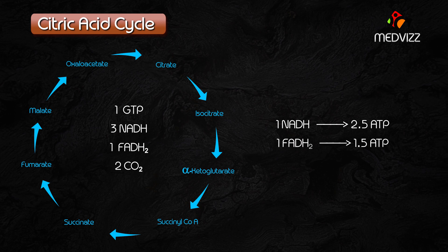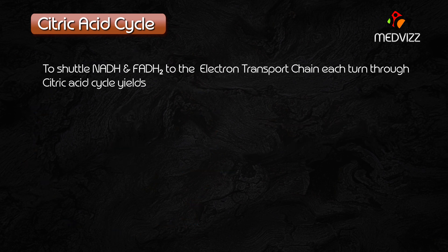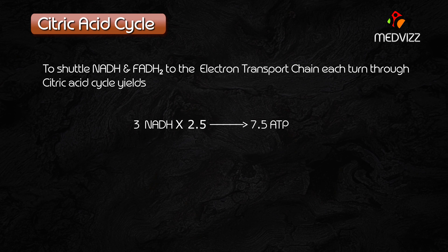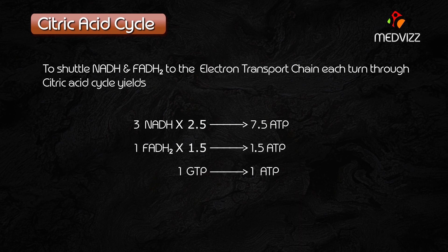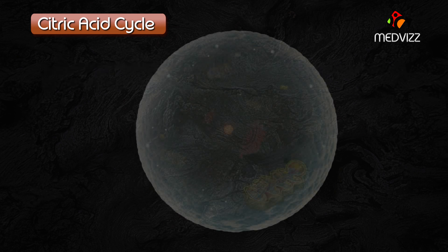1 FADH2 is equal to 1.5 ATP equivalents. However, because of the energy expenditure required to shuttle NADH and FADH2 to the electron transport chain, each turn through the citric acid cycle yields approximately 3 NADH × 2.5 = 7.5 ATP equivalents, and 1 FADH2 = 1.5, and 1 GTP = 1 ATP. So the total number of ATPs produced in 1 citric acid cycle is 10.